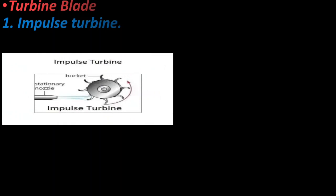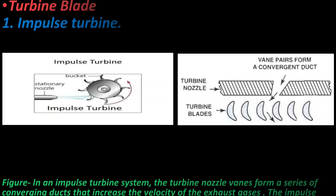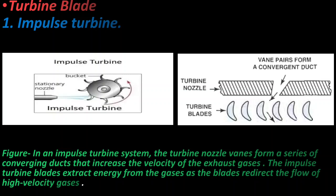Turbine blades are generally classified as impulse, reaction, or a combination of impulse-reaction. Impulse turbine. Now you can see here the picture of an impulse turbine. So the impulse turbine blade merely changes the direction of the airflow coming from the turbine nozzle and causes relatively no change in the gas pressure or velocity. The turbine will simply absorb the force required to change the direction of the airflow and convert it to rotatory motion. Now you can see in this picture there is an impulse turbine system. The turbine nozzle vane forms a series of converging ducts that increase the velocity of the exhaust gases. The impulse turbine extracts energy from the gases as the blade redirects the flow of high velocity gases.